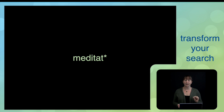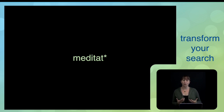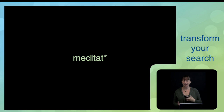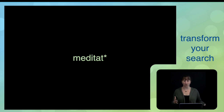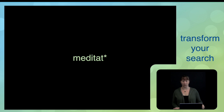The trick to using truncation is to make sure you truncate the word at the best possible place. For instance, truncating the word meditating after the G is completely useless because there are no words that start with meditating and have other endings. You have to shorten it down further than that to make the truncation tool relevant. On the other hand, if you shorten the word down too much you end up including a lot of irrelevant terms — for instance, shortening meditation down to M-E-D-I asterisk gives you words like medieval or medical. So always try to truncate enough to capture as many variations as possible while excluding irrelevant words.